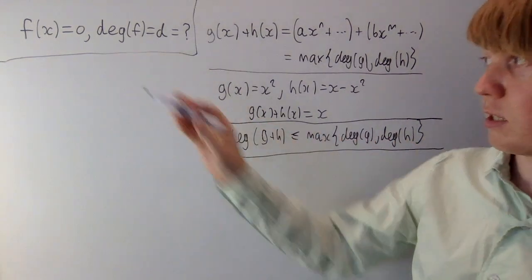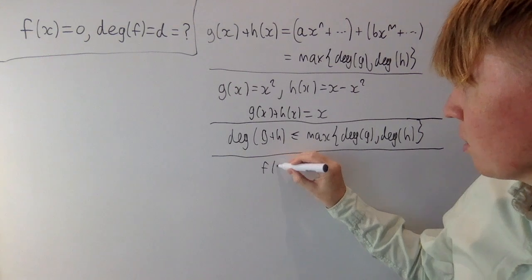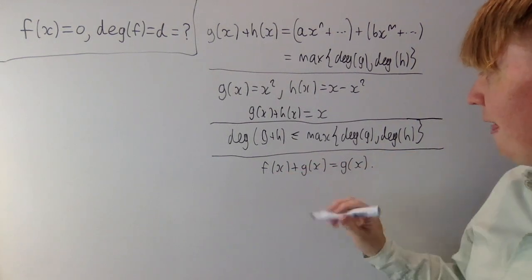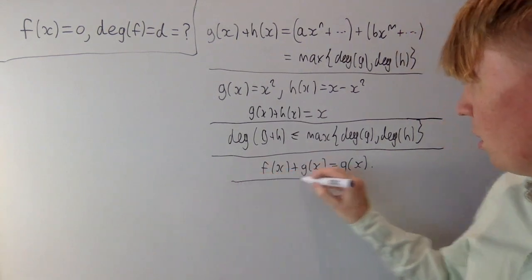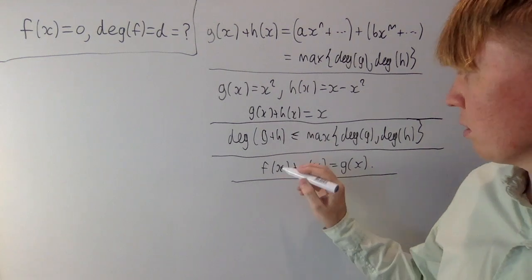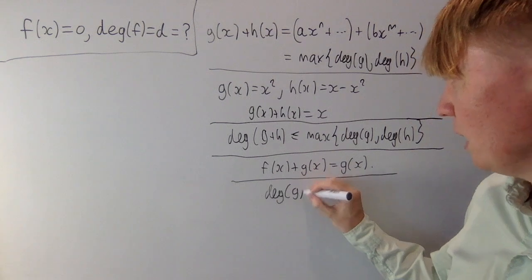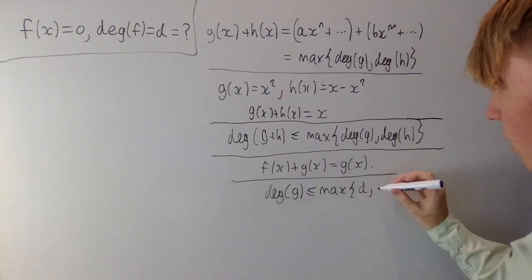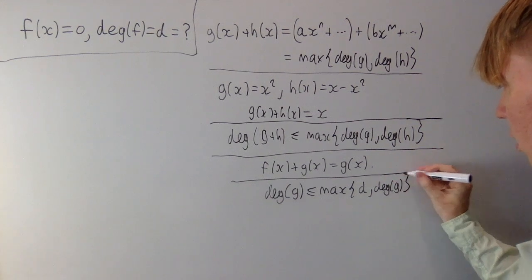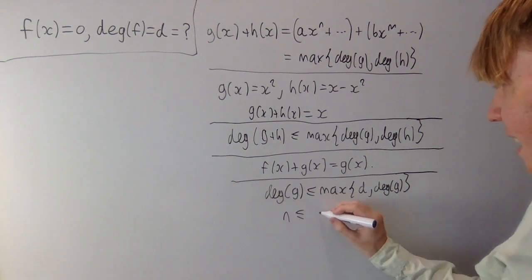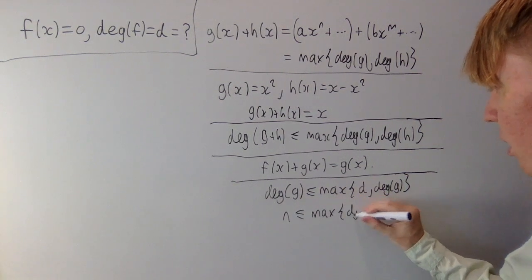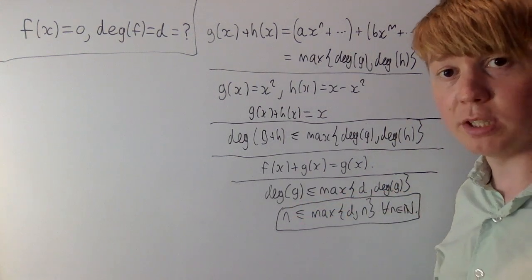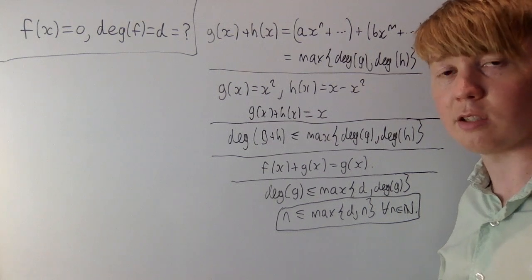So what does this tell us for f of x, the zero polynomial? Well, f of x plus g of x is just equal to g of x, so the degree of the sum is just the degree of g. Putting this into our formula, the degree of f plus g equals the degree of g, and this has to be less than or equal to the maximum of the degree of f — calling this d, the degree of the zero polynomial — and the degree of g. So for all natural numbers n, n has to be less than or equal to the maximum of d and n. This is consistent with d being equal to zero, but d could also be negative, so we'll explore more properties.